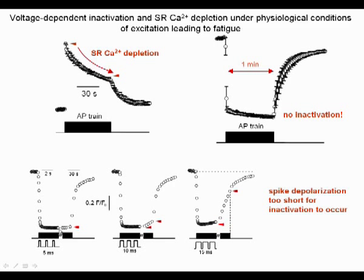There was indeed no sign of inactivation for trains of short voltage pulses of 5 ms duration, while inactivation occurred and reinforced as the duration of voltage pulses increased to 10 and 15 ms.